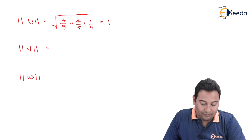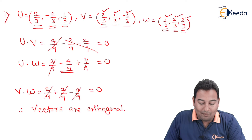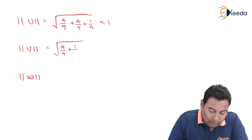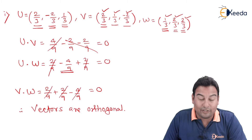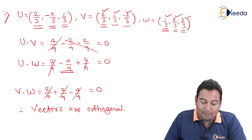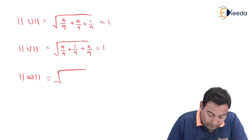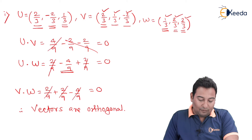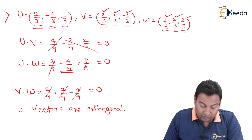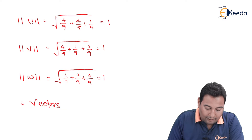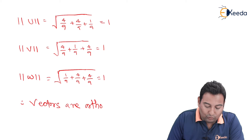For v = (2/3, 1/3, −2/3): (2/3)² = 4/9, (1/3)² = 1/9, (−2/3)² = 4/9 — total 9/9 which is 1. For w = (1/3, 2/3, 2/3): 1/9 + 4/9 + 4/9 = 9/9 which is 1. All dot products are 0 and all norms are 1, therefore the vectors are orthonormal.